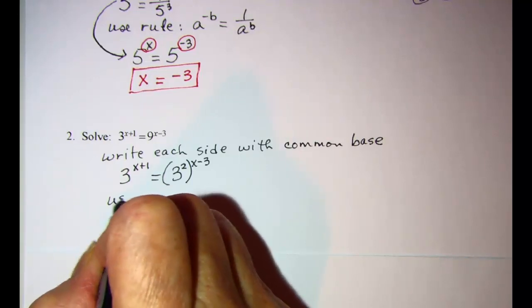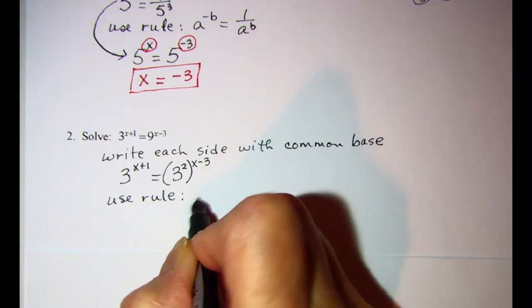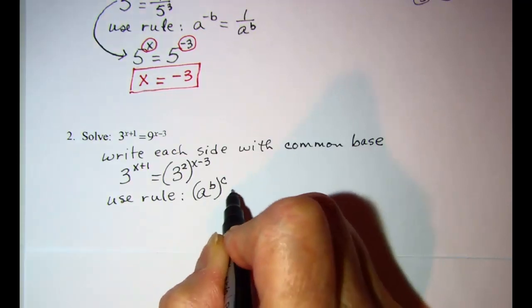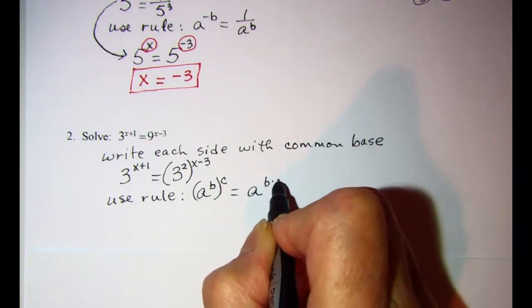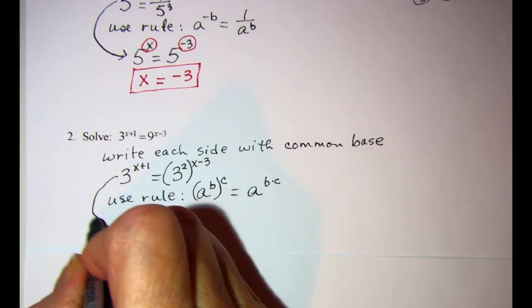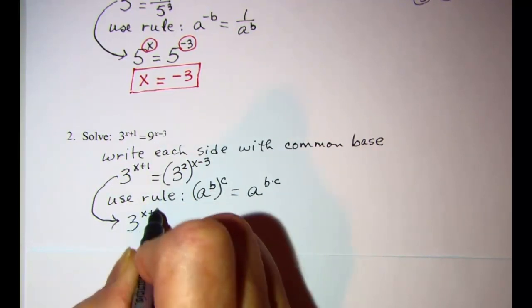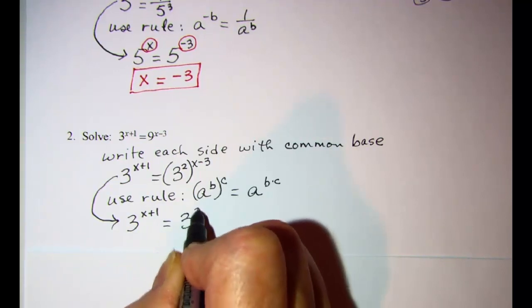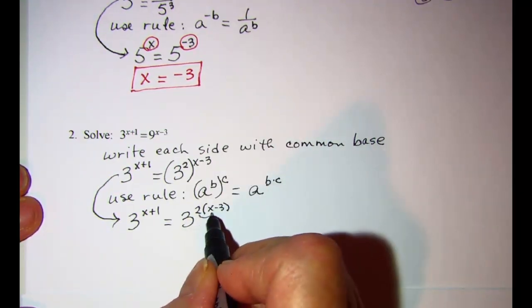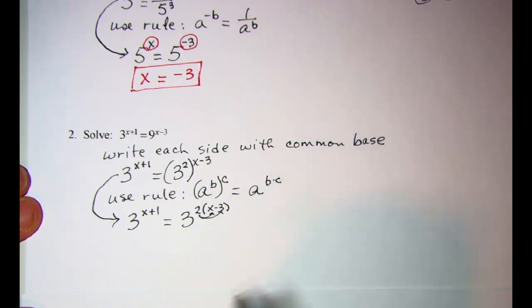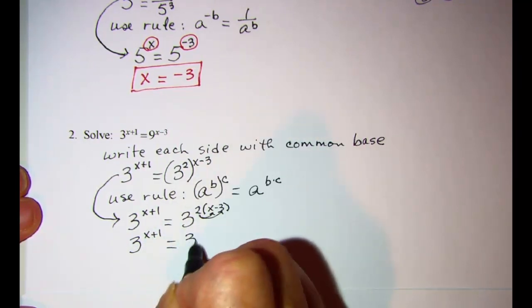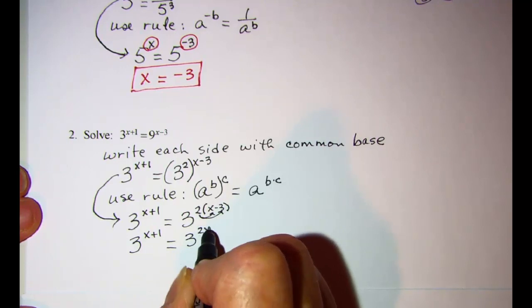Now we're going to use the rule that (a^b)^c = a^(bc). We multiply our exponents. So this is 3^(x+1) = 3^(2(x-3)). Now we're going to use our distributive property here and distribute that 2. So 3^(x+1) = 3^(2x-6).